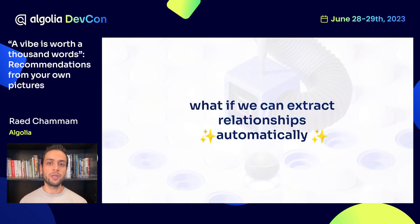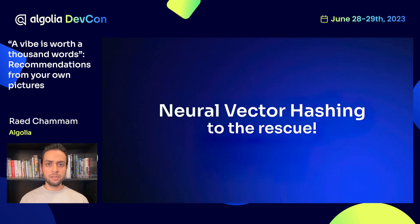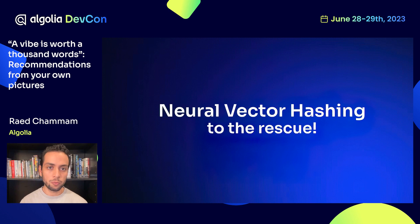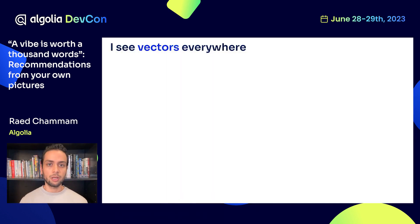So what if there is a way we can extract recommendations and relationships automatically from our images? Algolia built a new machine learning engine that uses neural hashes to be highly efficient and cost-effective. This unlocks a whole new world of possibilities. Today, we'll focus on how we can use this underlying technology to power our visual recommendation use case. But first, let's step back and have a high-level overview on vectors.